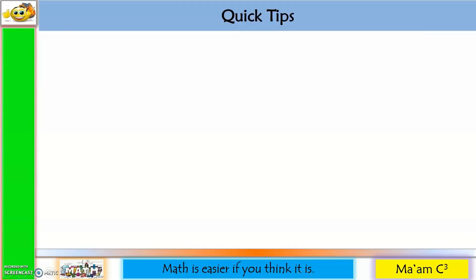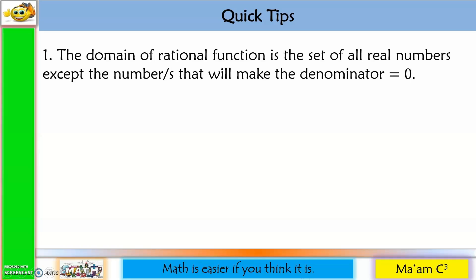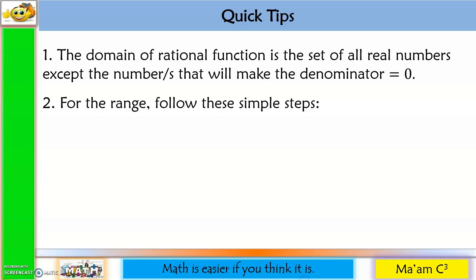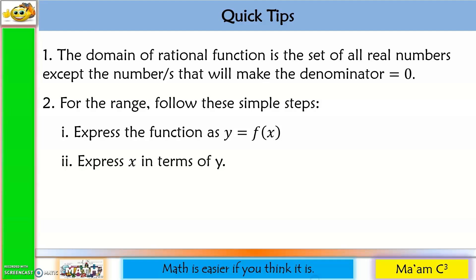Some quick tips. Number one: the domain of a rational function is the set of all real numbers except the numbers that make the denominator equal to 0. Number two: for the range, follow these steps — step one, express the function as y = f(x); step two, express x in terms of y; and step three, solve for the values of y.